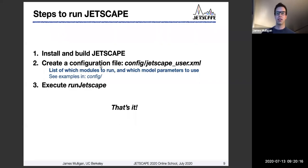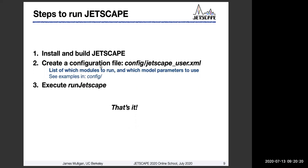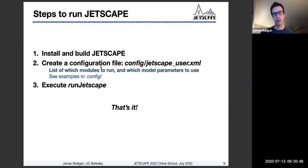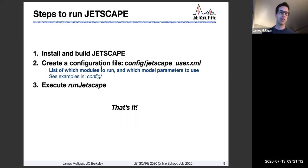Let's look at the specifics of what it looks like to actually run Jetscape. In a broad sense, there are three main steps, which we hope you'll find quite simple. The first is to install and build Jetscape, which all of you have likely done if you followed the prep instructions. The second step is to create a configuration file — you need to tell Jetscape which modules you want to run and which parameters to configure those modules with. We do this with XML files, which we'll see in quite some detail today. And finally, once you have provided a configuration file, you simply execute 'run Jetscape', passing your configuration file name, and you'll be up and running generating Jetscape events.